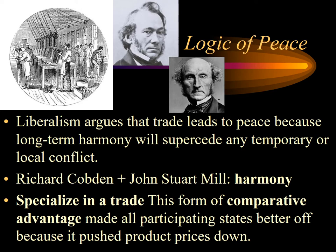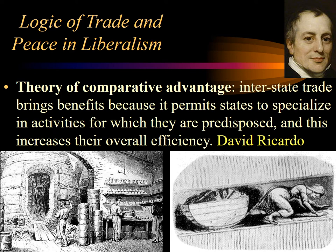Trade permitted states to specialize in those goods they were best at producing, and to receive in turn inexpensive products from other states with similar specialization. This form of comparative advantage made all participating states better off because it pushed product prices down. The theory of comparative advantage argues that interstate trade brings benefits because it permits states to specialize in activities for which they are predisposed, increasing their overall efficiency. The classic example is offered by the economist Ricardo.